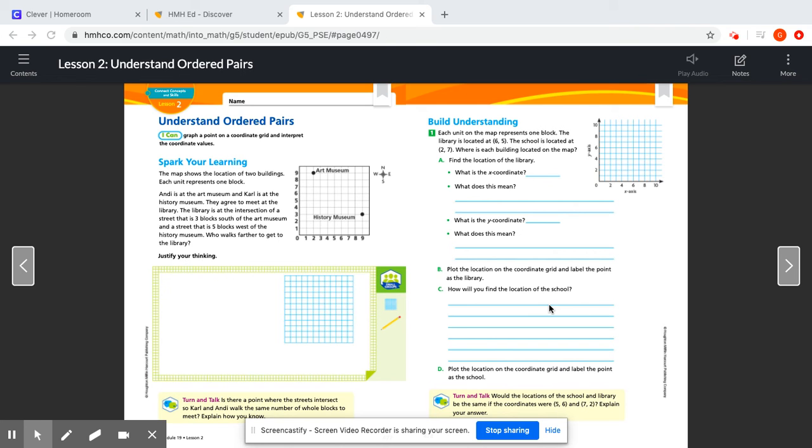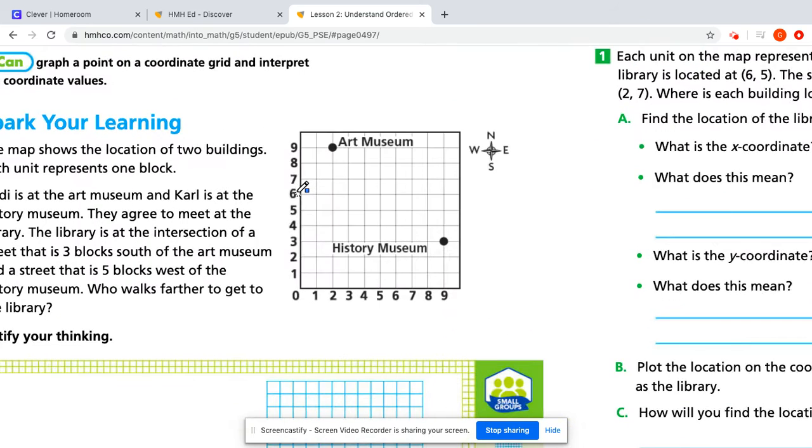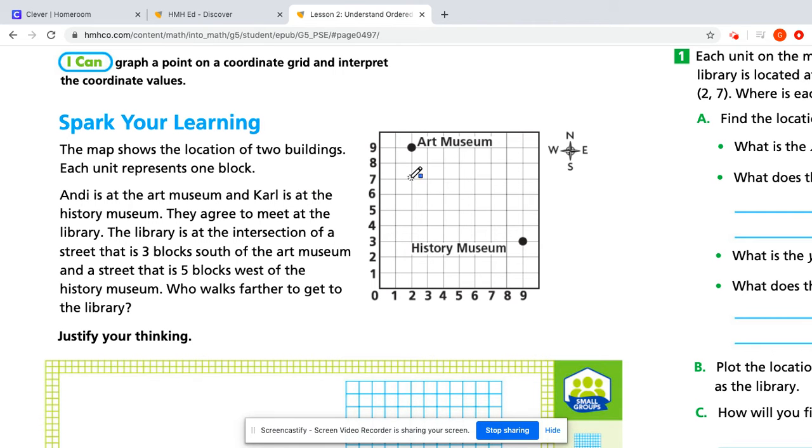Hey boys and girls, I just wanted to help you out with your work. We're going to start with page 477 with the Spark Your Learning. We're going to be talking about Andy and Carl. So Andy and Carl want to meet up at the library, but in order to figure that out, we have to plot for the library.